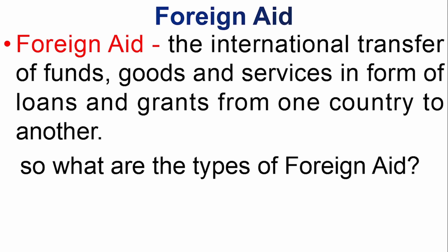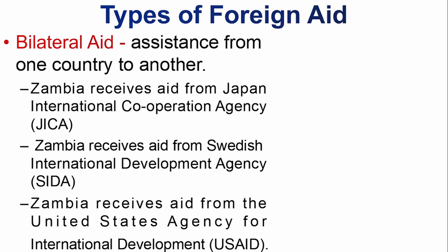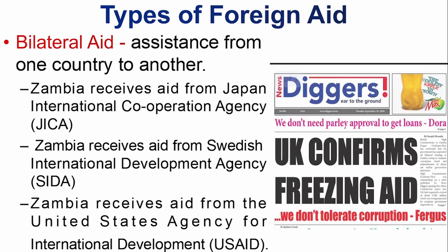There are two types of foreign aid. The first is bilateral aid and the second is multilateral aid. Bilateral aid is assistance from one country to another. For example, Zambia can receive aid from Japan, Sweden, or the USA. The prefix 'bi' means two — two countries exchanging assistance, one giving to another. Zambia has received aid from many different countries.